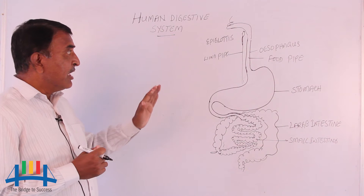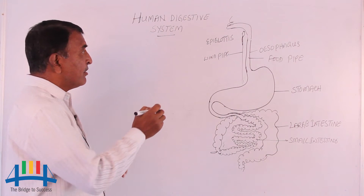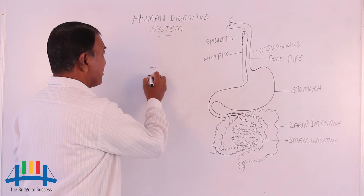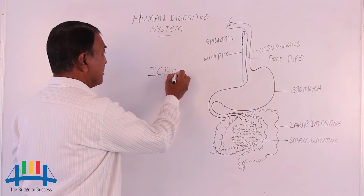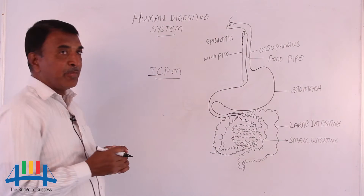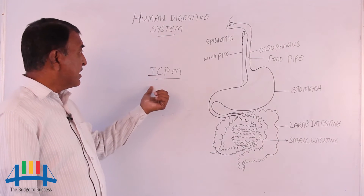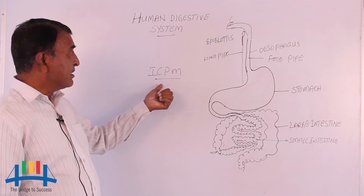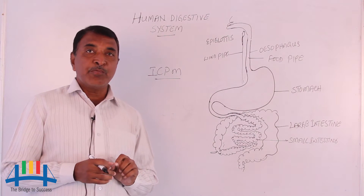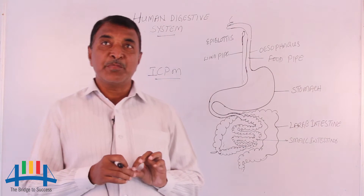In human beings, there are four types of teeth present. Generally we can call it as ICPM. What is ICPM? Incisors, canines, premolars, and molars. These are the four types of teeth arrangement that is present.